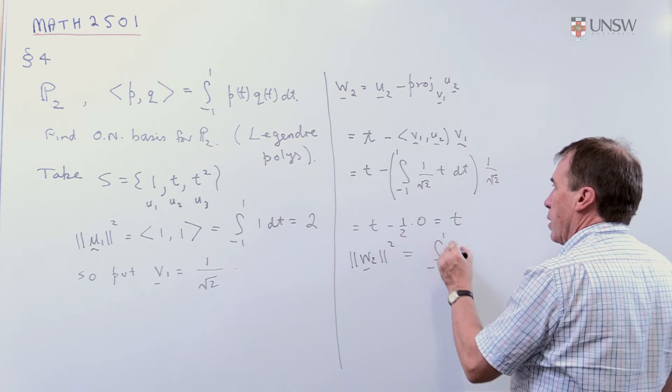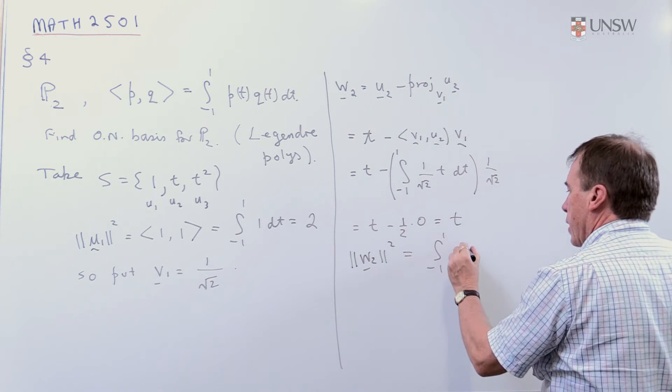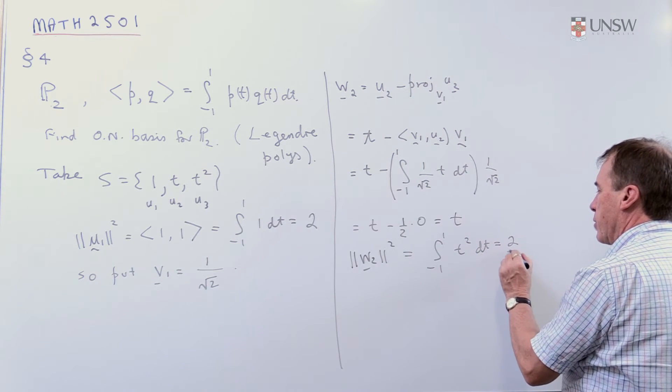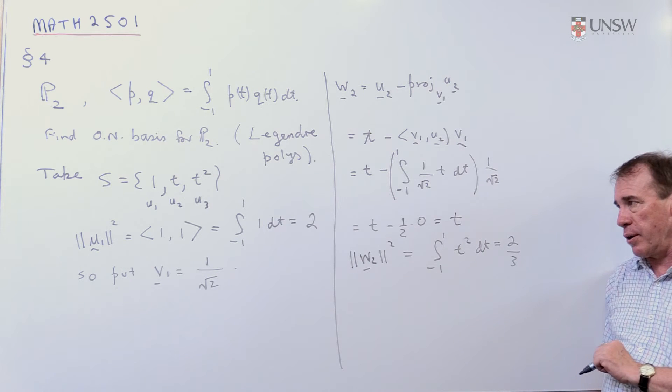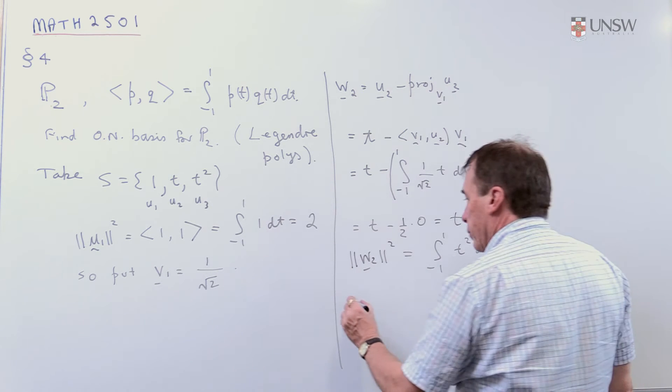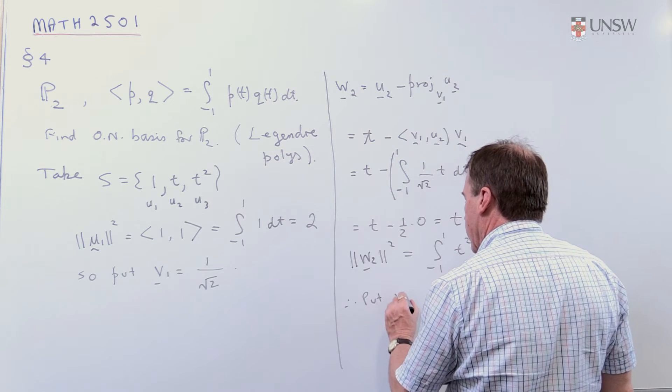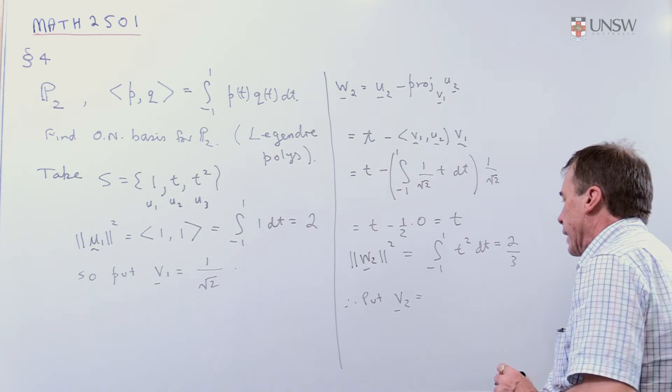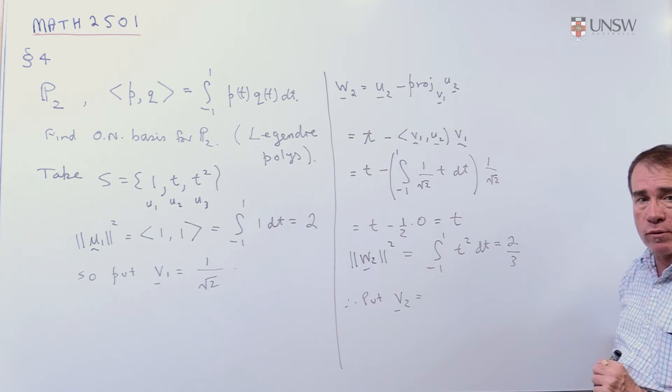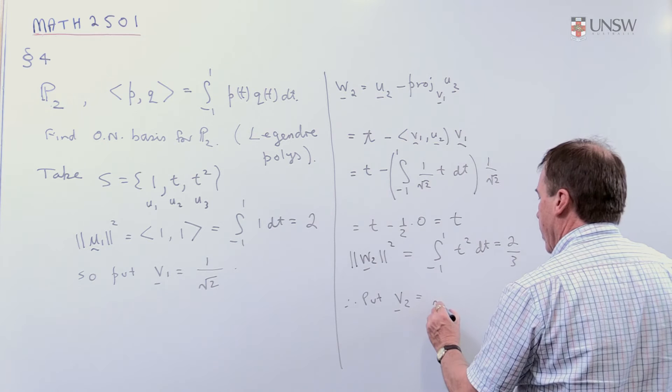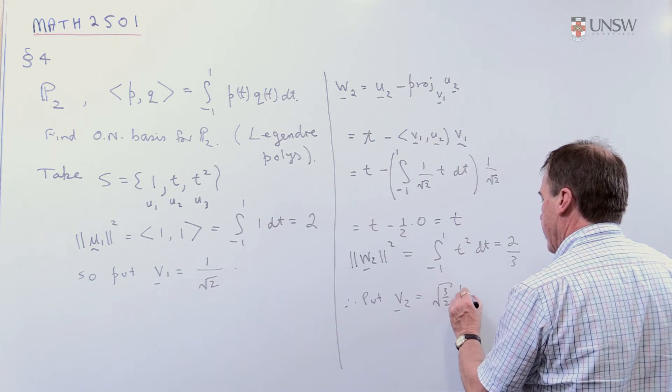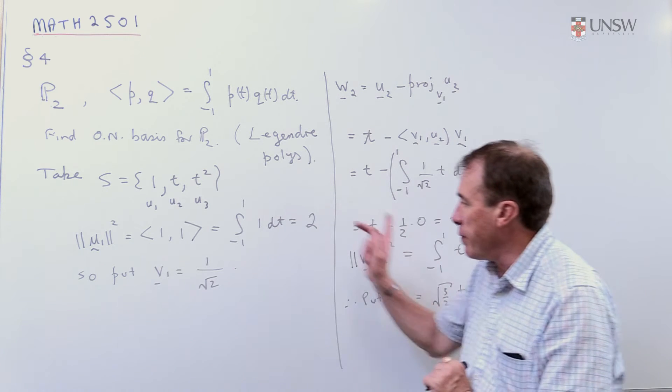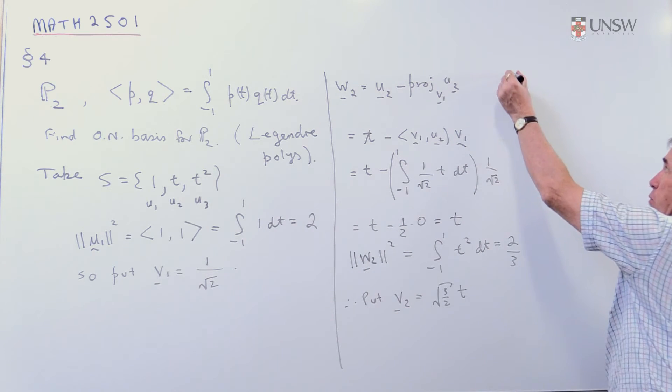So I need to get the length now of the vector W2 and the square of that. So that's the integral of, I take this and multiply it by itself and integrate. And that gives me two-thirds when you do the arithmetic on that one. So, I'm now going to put my second unit vector. I now need to normalise this vector. So I divide by its length. Its length is the square root of two-thirds. So you divide by that is the square root of three-halves. So at the moment, then, this vector and this vector are orthogonal and they both have length one.